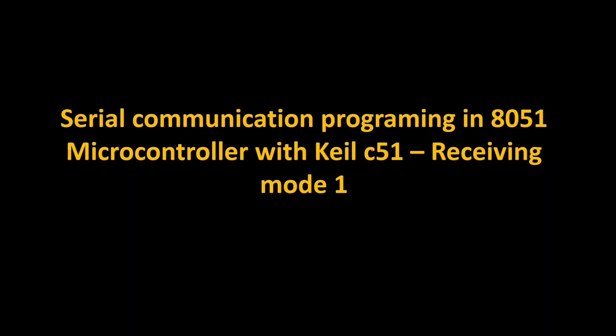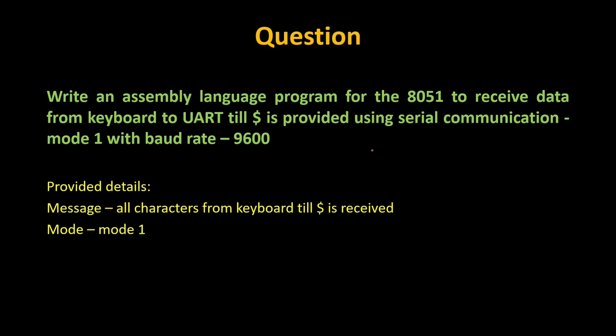This is the fourth video in serial communication. In the previous video we saw how to transmit data using Mode 1. Now we are going to see how to receive data using Mode 1. The program given to us: write an assembly language program for 8051 to receive data from the keyboard to the UART screen until the dollar symbol is received. The specifications are Mode 1 and baud rate 9600.